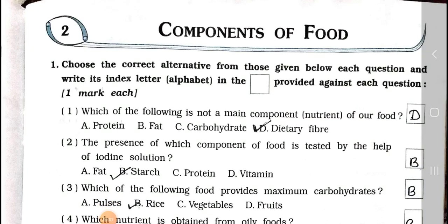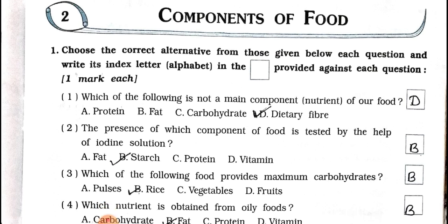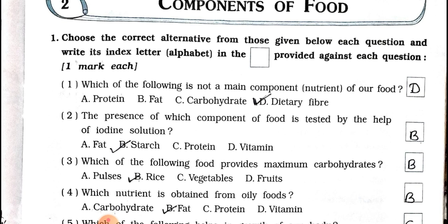Hello students, how are you all? I hope you all are fine. Today we'll see Standard 6, subject Science, Chapter Number 2: Components of Food. In that, main one — choose the correct alternative from those given below each question and write its index letter in the box provided. It carries one mark each. Number one: which of the following is not a main component — nutrients — of our food?